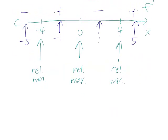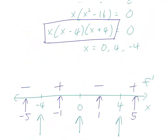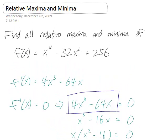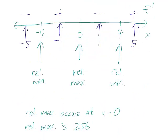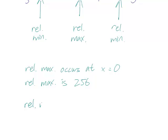And so we can say that the answer is relative maximum occurs at x equals 0. And the relative maximum itself is the y value. So we got to plug 0 back into the original function. That gives us 256.